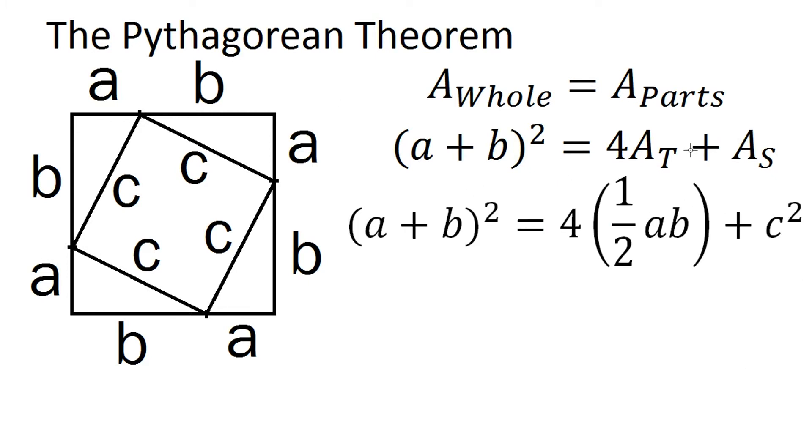So now working these out, the area of one of these triangles is going to be one half base times height, and the base is just a or b, and that's multiplied by one half. And the area of this square in here is just going to be the length of the side squared, in this case that's c squared.